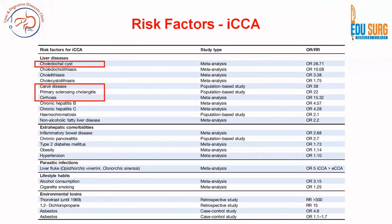Further risk factors include NAFLD with relatively low risk, obesity, diabetes, hypertension, chronic pancreatitis, and inflammatory bowel disease with extrahepatic conditions. Liver flukes are also a risk factor — ICCA is more common than extrahepatic CCA in liver fluke infection. Alcohol and smoking are common risk factors for almost all cancers. Thorotrast has a relative risk of more than 300 but is not currently used. Industrial agents include 1,2-dichloropropane and asbestos.